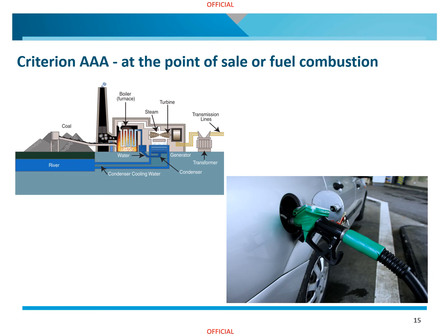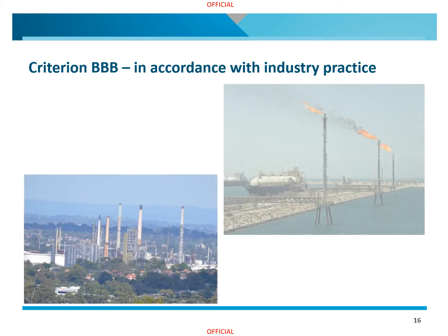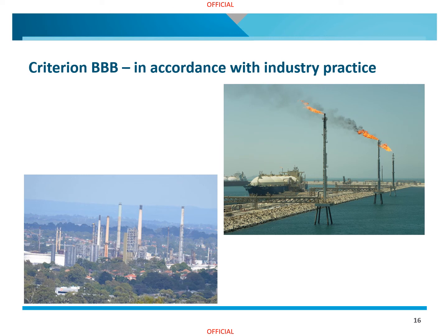Criterion BBB might be used, for example, for production of secondary oil products at a crude oil refinery, or own gas consumption at a liquefied natural gas terminal. Criterion BBB is used for measurements in accordance with industry practice, and can only be used if the fuel cannot be measured under Criteria A, AA, or AAA. Therefore, fuels that can be verified using supply invoices cannot be measured using Criterion BBB.